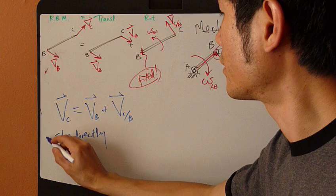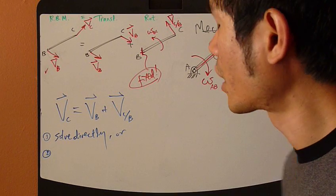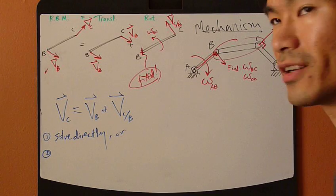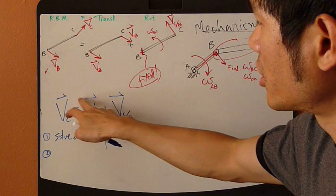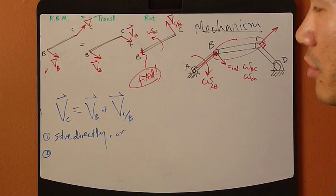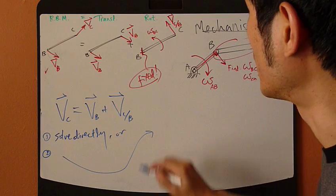Solve directly, or you can solve for it graphically by drawing the vector loop of these three vectors. VC equals VB plus that. So let's draw it here. VC duplicated here.